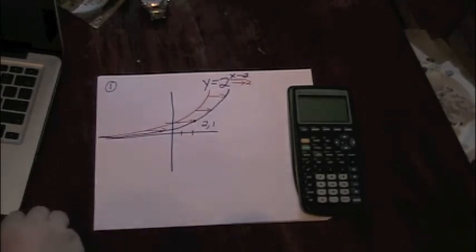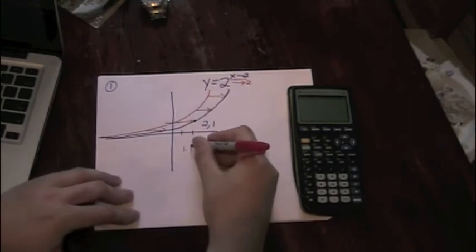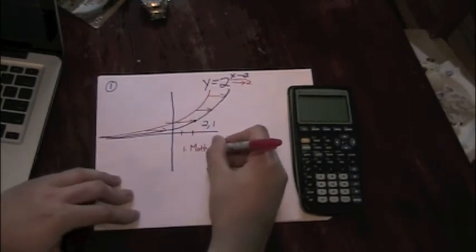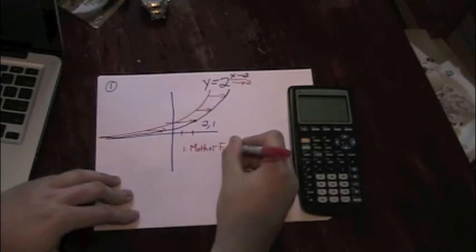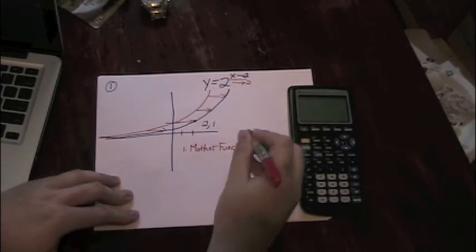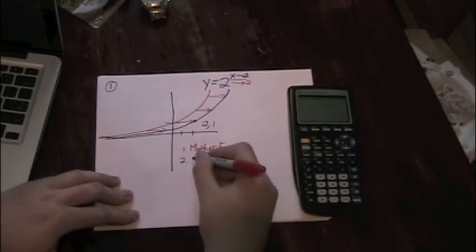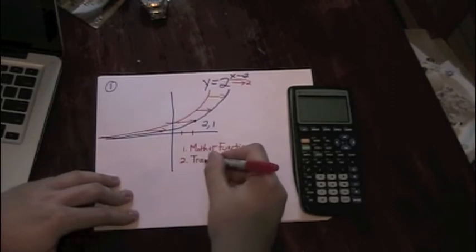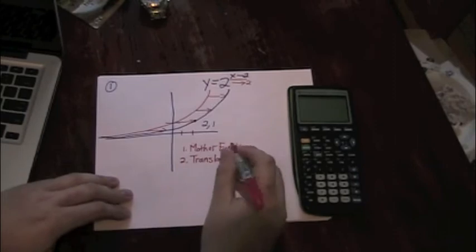To review all we did was take a look at the mother function and use that mother function to translate or stretch the graph. In this case, we translated 2 to the right.